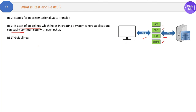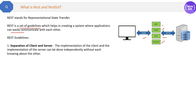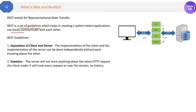The first guideline is separation of client and server. The implementation of the client and the implementation of the server should be done independently without knowing about each other. For example, client UI can be developed in Angular, React or any other front-end technology, and it is not dependent on the server technology, which can be .NET, Java, etc. So the business logic is separated. This is the separation of client and server guideline of REST.